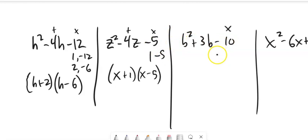And this one, they multiply to negative 10, add to 3. The larger of the two, the bigger in magnitude, is going to have to be the positive one. Negative 2 and positive 5, that's it. b minus 2, b plus 5.